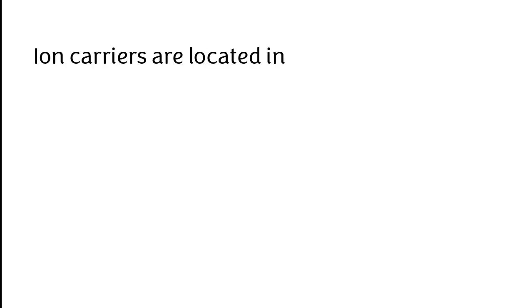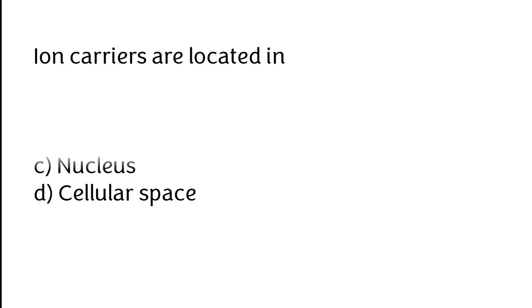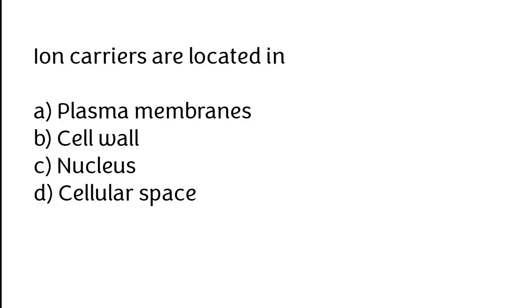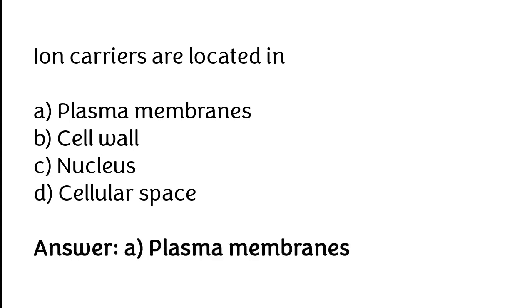Iron carriers are located in: A) Plasma membranes, B) Cell wall, C) Nucleus, D) Cellular space. The correct answer is option A — iron carriers are located in plasma membranes.